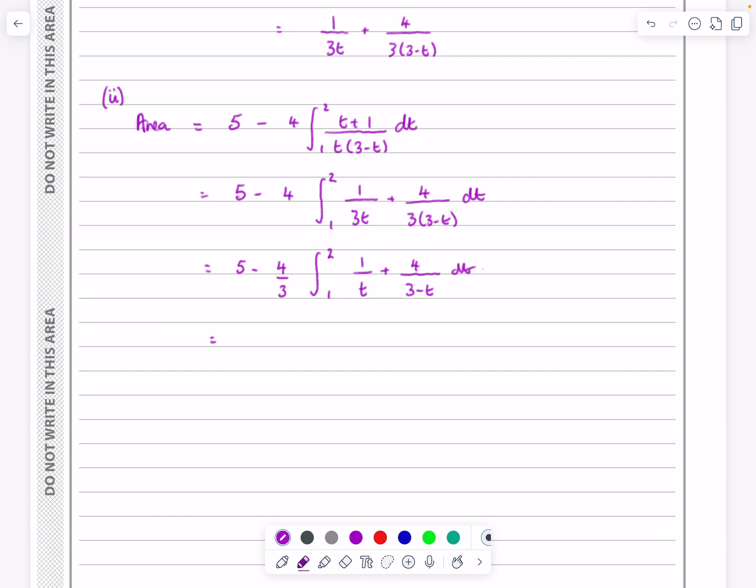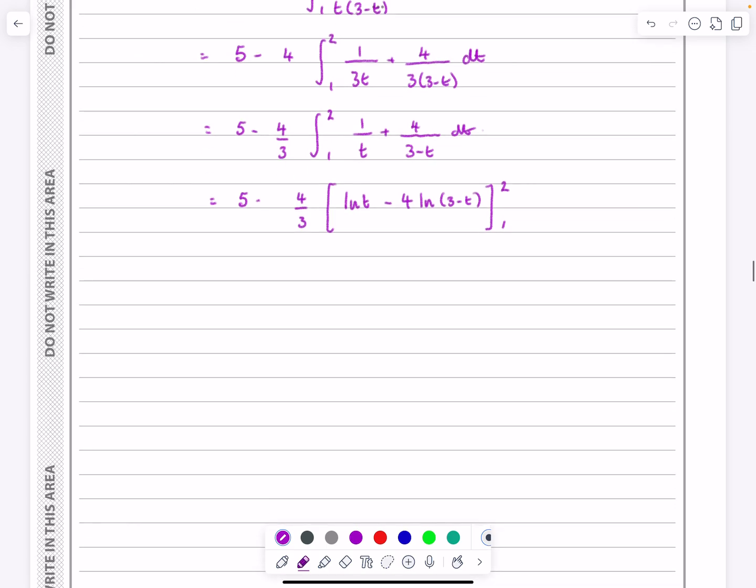And I'm going to do this pretty quickly from here, because I'm assuming that you would have practiced these and would be able to do these integrals. The integral of 1 over T is log T. The integral of 4 over 3 minus T, well, first of all, let's treat it as 1 over 3 minus T. So the integral of 1 over 3 minus T is log 3 minus T. But because of the minus, it becomes minus log 3 minus T. And then we had a 4 on the top, so that 4 doesn't go anywhere. So that's going to be that 4 thirds, and that between the values of 2 and 1.